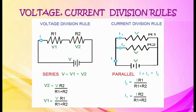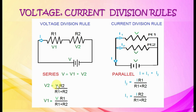Voltage division rule is applied in a series circuit and current division rule in a parallel circuit. In a series circuit the total voltage is sum of voltages across all resistors. In a parallel connection total current is the sum of currents through parallel resistors. Voltage division: voltage across second resistor equals total voltage times second resistance by total resistance. Current division: current through second resistor is total current times first resistance by total resistance.